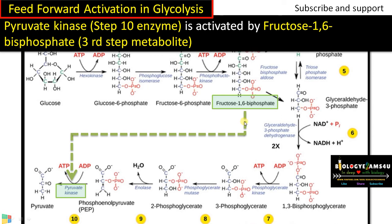Fructose-1,6-bisphosphate is produced by PFK (phosphofructokinase), the enzyme in the rate-limiting step. Therefore, sufficient fructose-1,6-bisphosphate signals that the reaction should move forward. Pyruvate kinase is the enzyme involved in the final step, catalyzing the formation of the final product pyruvate.